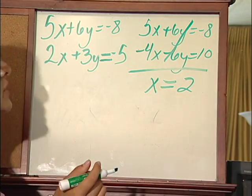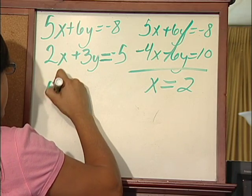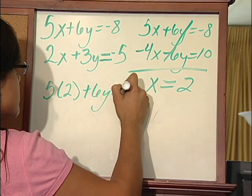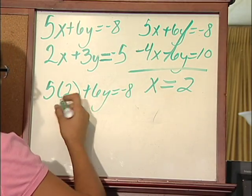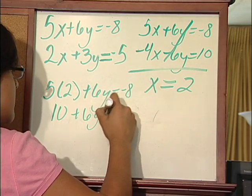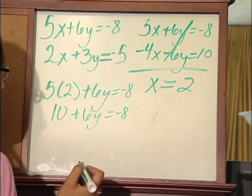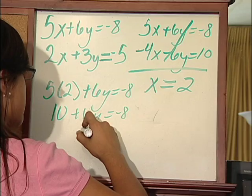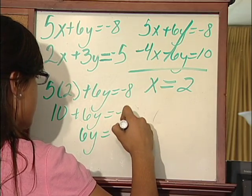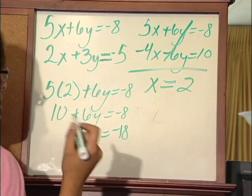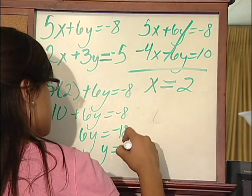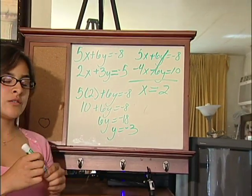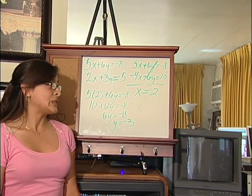Now we will substitute 2 into the first equation: 5 times 2 plus 6y equals negative 8. Simplify to get 10 plus 6y equals negative 8. Subtract 10 from both sides to get 6y equals negative 18. Divide both sides by 6, and you get y equals negative 3. That's how you solve the system of equations using this method.